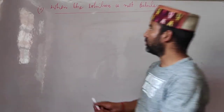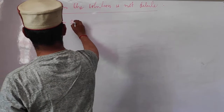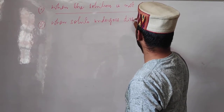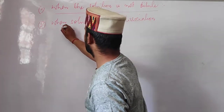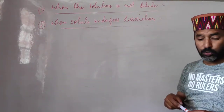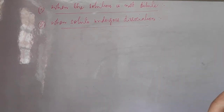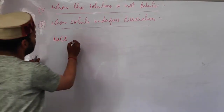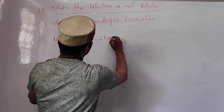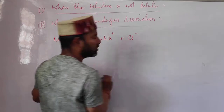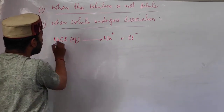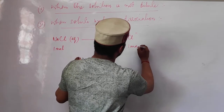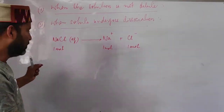The second reason for abnormal molecular mass is when the solute undergoes dissociation. For example, NaCl is an electrolyte which in aqueous solution dissociates into sodium and chloride ions. So if we add one mole of sodium chloride, in the solution we will have two moles of solute particles because sodium and chloride ions dissociate.